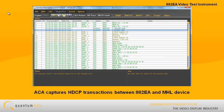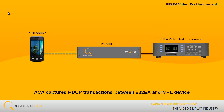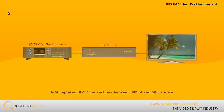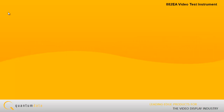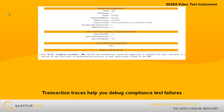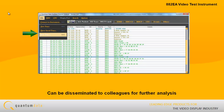The 882-EA can be used to capture the HDCP transactions between the 882-EA and the source or an MHL-capable display device under test. The 882-EA Transaction Traces help you debug compliance test failures if and when they occur and can be disseminated to colleagues for further analysis.